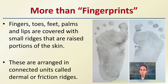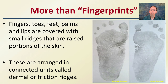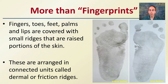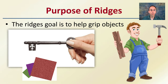This applies to more than just fingerprints. Fingers, toes, feet, palms, and lips are covered with small ridges — raised portions of the skin — arranged in connected units called dermal or friction ridges. The purpose of these ridges is to help grip objects; they act like sandpaper so you can hold on to things.